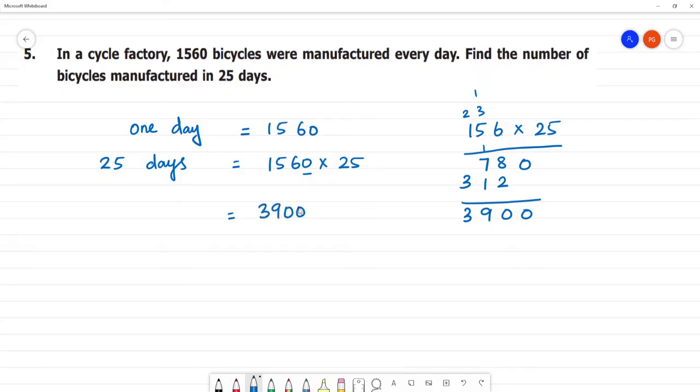So the answer is 39,000 bicycles are manufactured in 25 days. Clear? 39,000 bicycles are manufactured in 25 days.